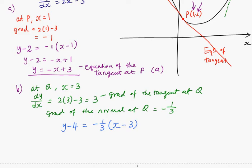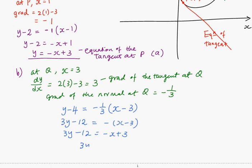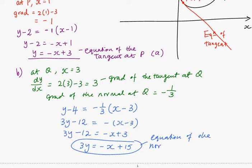I multiply the equation throughout by 3. 3y minus 12 equals to minus x minus 3. Hence, I have 3y equals to minus x plus 15. So this is the equation of the normal at Q.